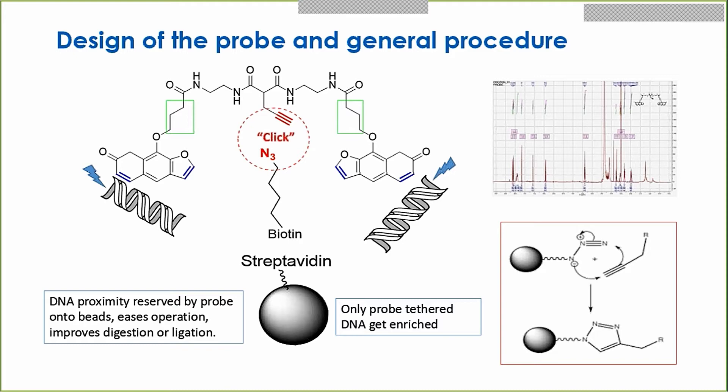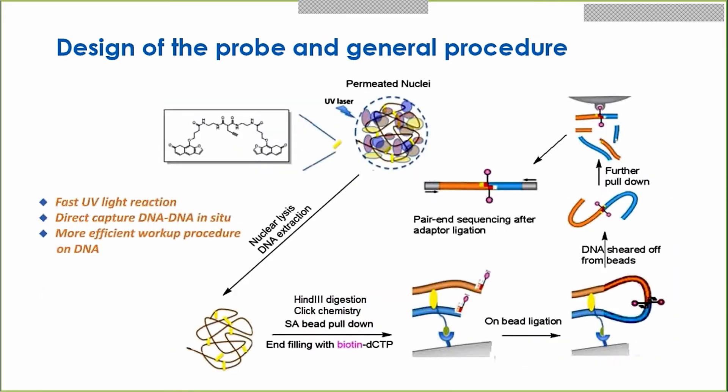Through this approach, the DNA proximity captured by the probe can be pulled down onto the beads. Extracting the DNA improves the efficiency of digestion and ligation on beads, and only the probe-tethered DNA gets enriched. The general procedure involves incubation of our probe, followed by UV photo cross-linking, then DNA extraction — at which point the proximity information is already preserved. The remaining steps are similar to TCC, involving restriction digestion, click chemistry pull-down onto beads, shearing the DNA off from the beads, a second pull-down using biotin-dCTP to further enrich the signal, and then paired-end sequencing.